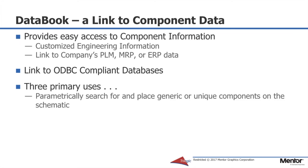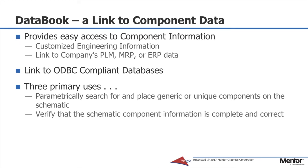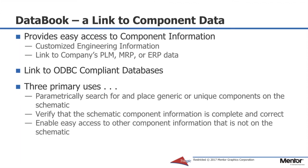The first use is to parametrically search for and place either generic or unique components on the schematic. I don't have to know exactly what part I want to place before I make a decision — I could just place, for example, a tiny microfarad capacitor and decide later the specific part. The second use is to verify that the schematic component information is complete and correct. And lastly, the third is to enable easy access to other component information that is not on the schematic.